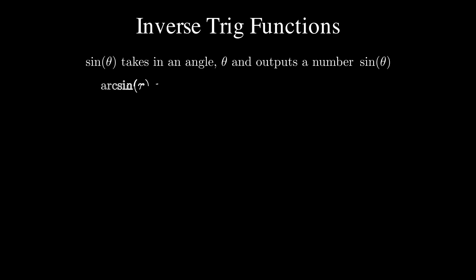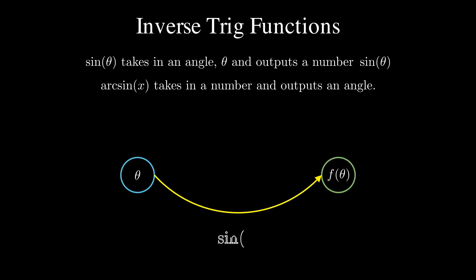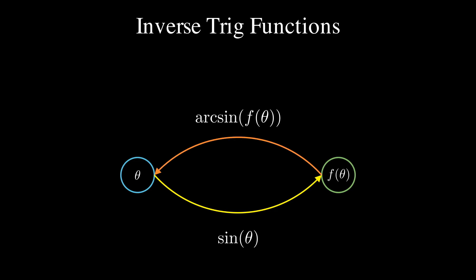Lastly, we're going to be talking about inverse trig functions. So a function like sine theta takes an angle theta and outputs the number sine theta. The inverse of that, arcsine, takes in a number and outputs an angle. So here we have our illustration showing you have theta to f(theta), and from there we apply sine. To go backwards, we apply arcsine. Similarly for cosine and arccosine, tangent and arctangent.